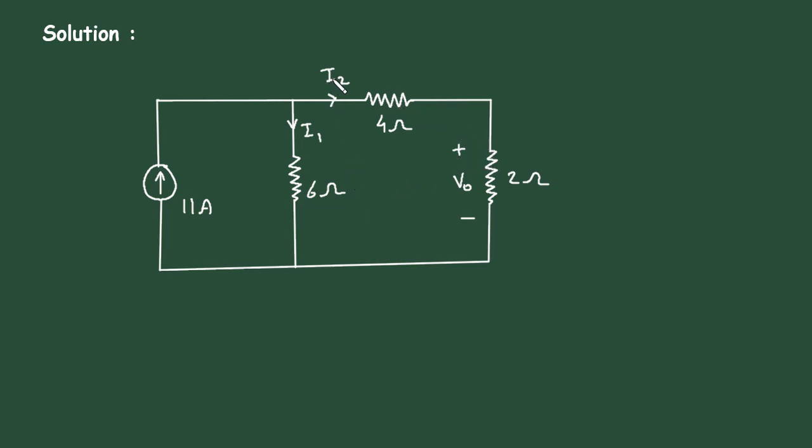First of all, we will find the value of I2, and then we will multiply this I2 with 2 ohm and get the value of VO.